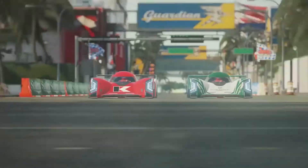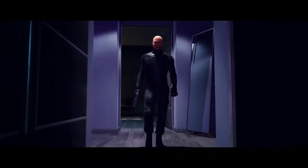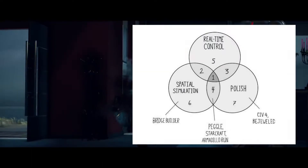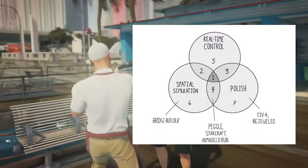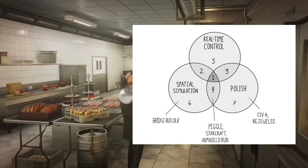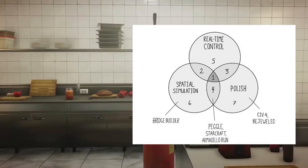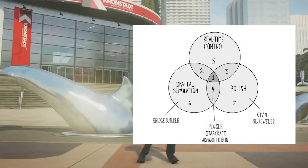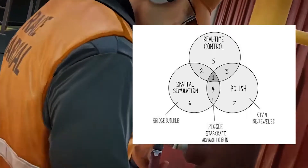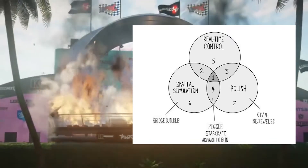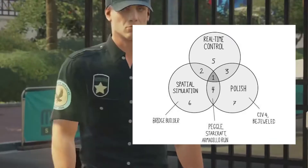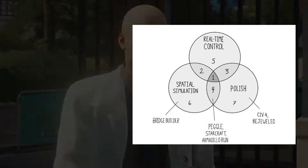Let's now imagine those pillars as building blocks — it will look something like this. As you can see, numbers 5, 6, and 7 are those pillars we just talked about. Number 2 is a game that has no polish, 3 is a game that has no simulated space, 4 is a game that has no real-time control, and number 1 is a game that has an amazing game feel.